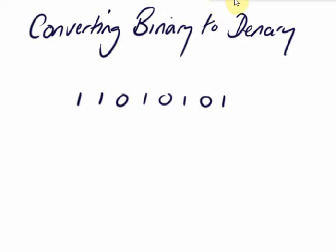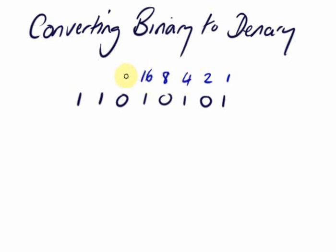Let's convert a binary number into denary. Start with a simple case of an unsigned binary number. I'm going to start by writing above each binary digit what its value is in denary. Each time I write the next number to the left, they're doubling.